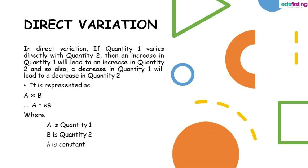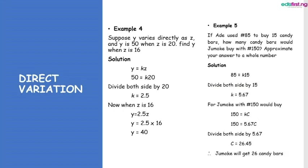Example 4: suppose y varies directly as z, and y is 50 when z is 20. Find y when z is 16. We write y equals kz, then substitute: 50 equals k times 20. Dividing both sides by 20, k equals 2.5. Now find y when z is 16: y equals 2.5 multiplied by 16, so y equals 40.